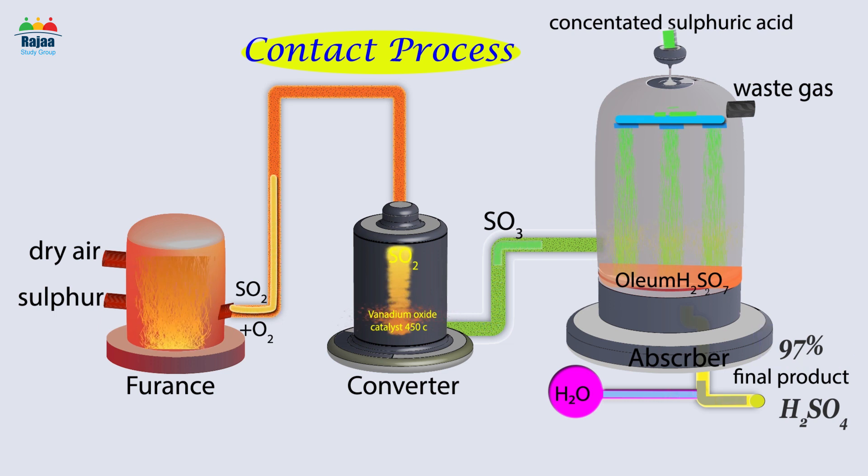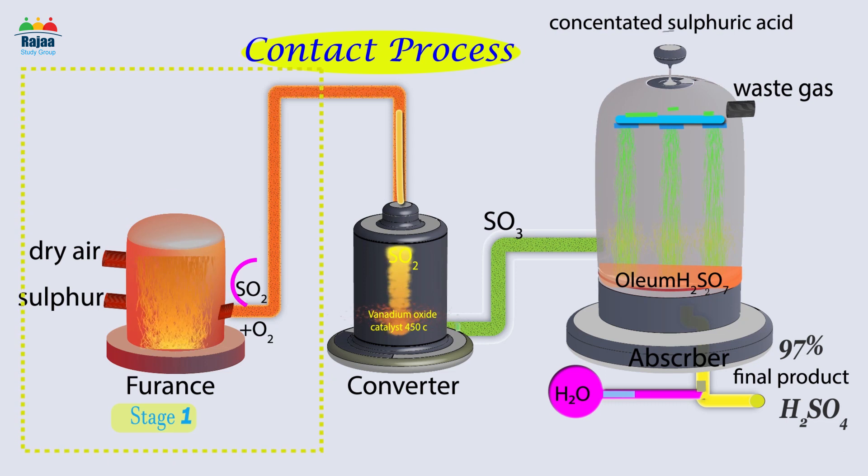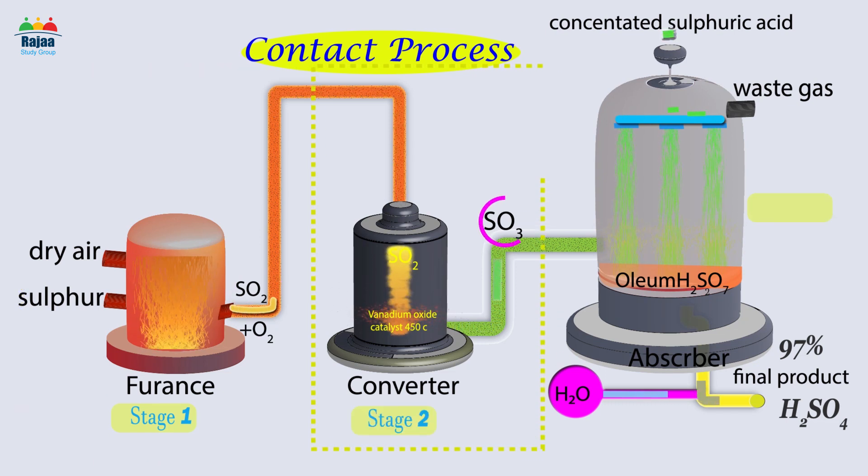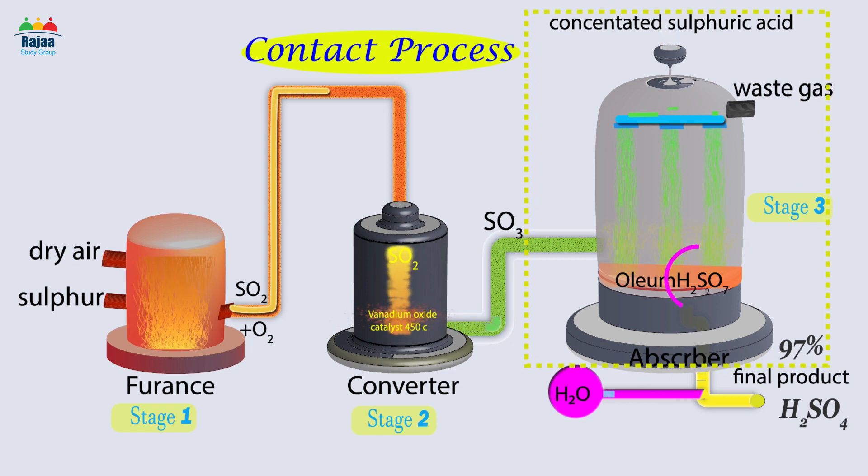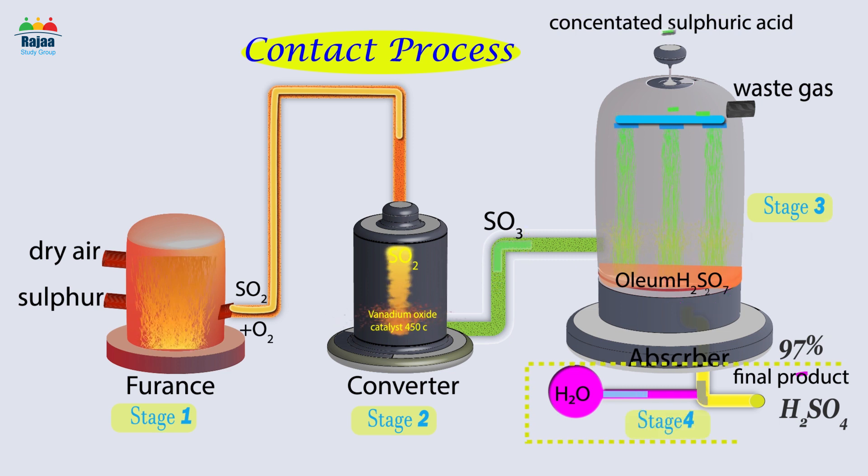The procedure is divided into four major steps: Stage 1: Molten sulfur burns in air to produce sulfur dioxide. Stage 2: Sulfur dioxide reacts with oxygen to form sulfur trioxide. Stage 3: Sulfur trioxide combines with concentrated sulfuric acid to form oleum H2S2O7.